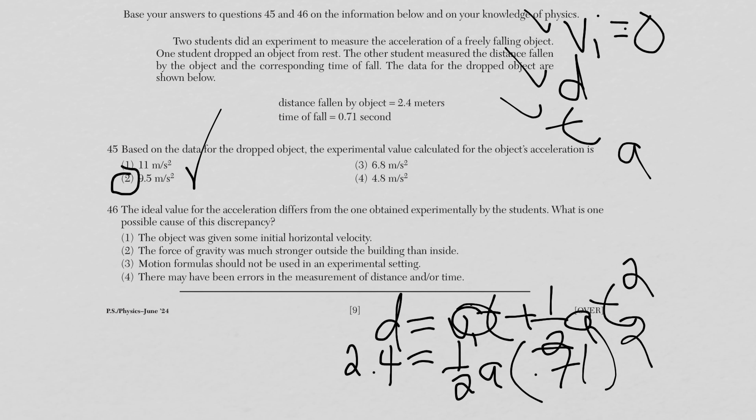For question 46, the discrepancy between the ideal and experimental acceleration values is due to measurement errors — choice four. The other choices (initial horizontal velocity, stronger gravity outside, motion formulas not valid in experiments) are not valid explanations.